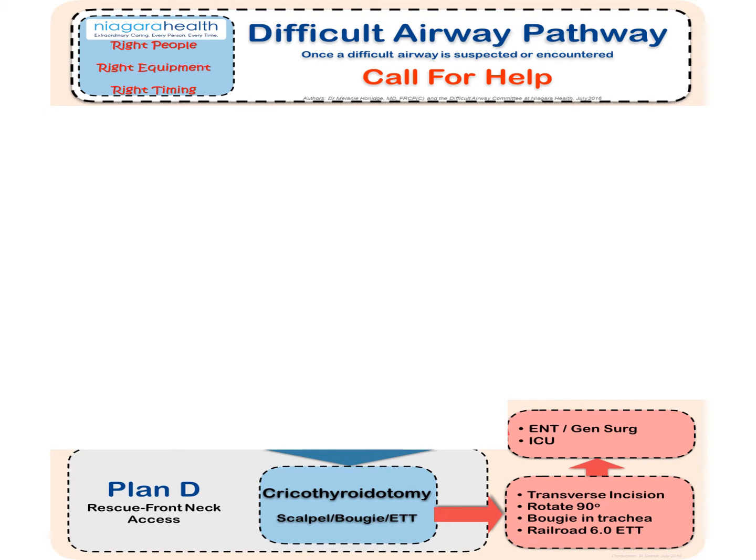We've gone into a dire situation where we can't intubate, can't oxygenate this patient, and we must move on to Plan D. We need rescue front of neck access so that we can use an emergency surgical airway technique — specifically an open cricothyrotomy using a scalpel-bougie-endotracheal tube technique.